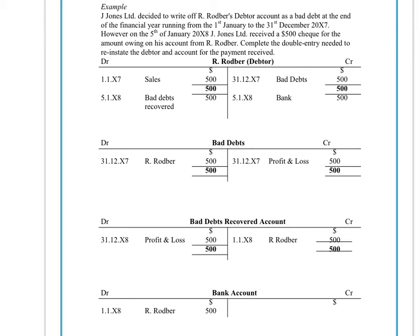Today we're going to look at bad debts recovered and how we go about doing the double entry for bad debts recovered. From the previous video you'll remember that we discussed bad debts and how if a person was unwilling or went bankrupt — in other words a debtor was not able to pay you back — then you would write it off as a bad debt.